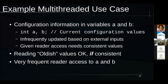Let's look at a multi-threaded use case. We have configuration information — variables A and B — that are updated occasionally due to some external inputs. A given reader needs to have consistent values; it's okay for it to get something a little bit old — maybe a second or two, maybe a few hundred milliseconds. But it's really bad if a reader gets an old A and a new B. It has to have the corresponding A and B together. There are a lot of readers, they happen really often, and we need this to be very fast.